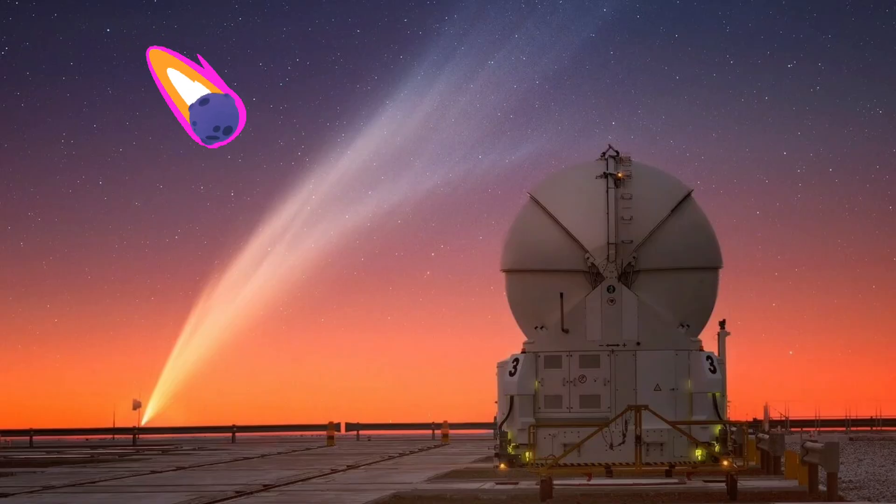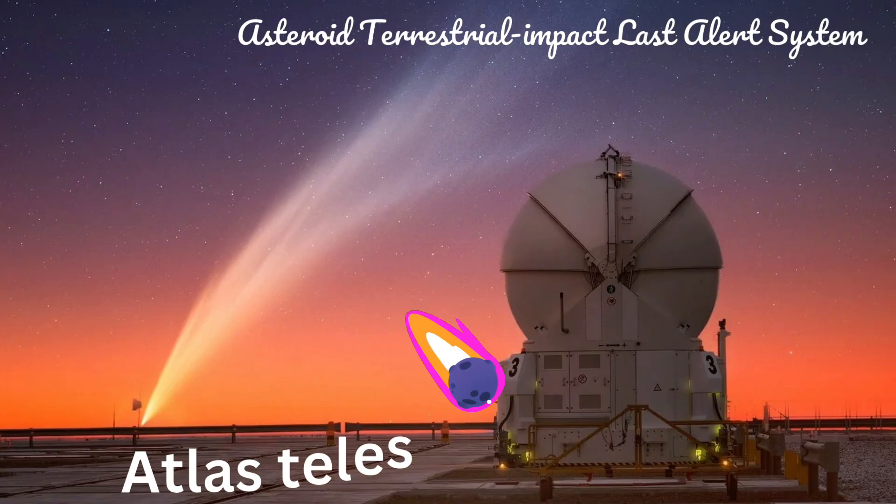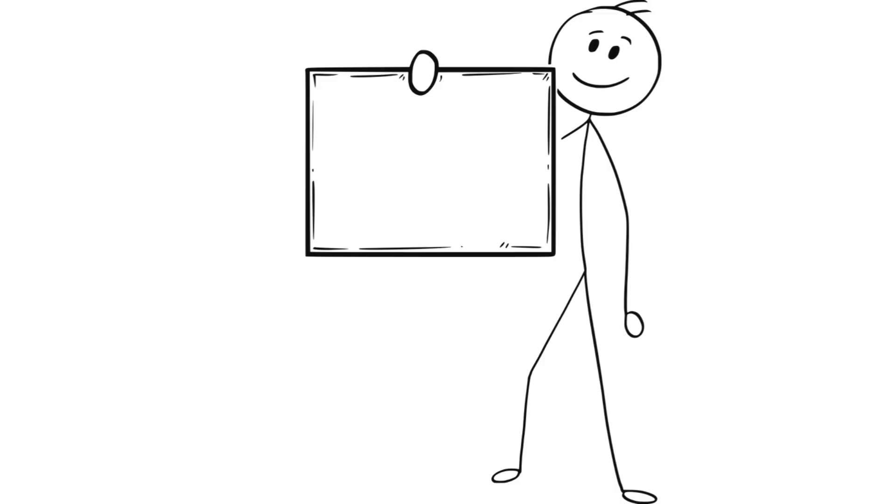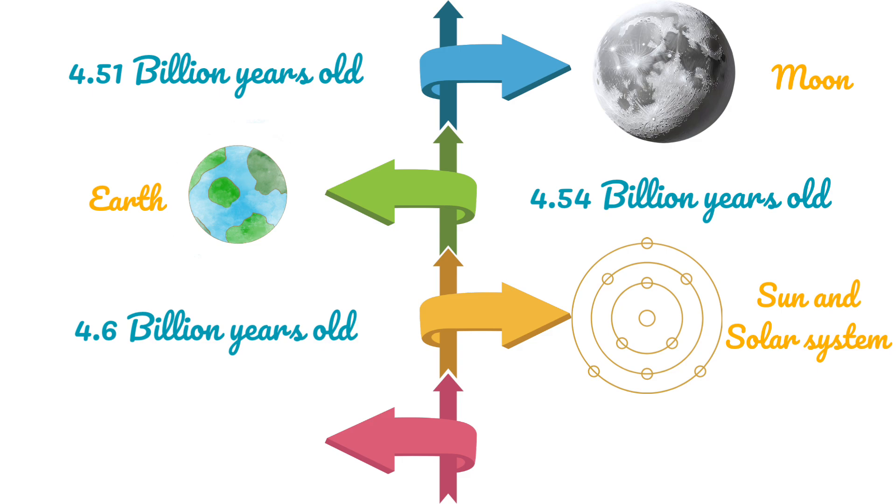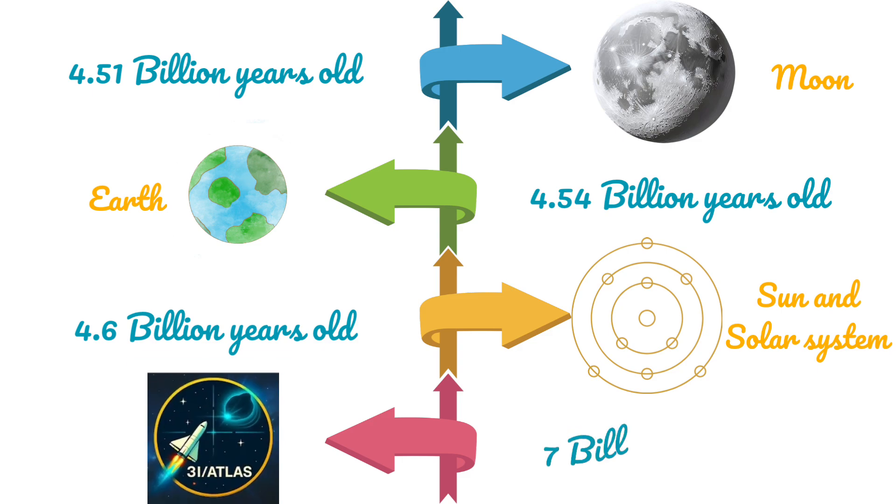3i Atlas was discovered by the Asteroid Terrestrial Impact Last Alert System or Atlas Telescope in Chile. Here's the crazy part. Scientists believe 3i Atlas could be around 7 billion years old. That's older than our entire solar system.